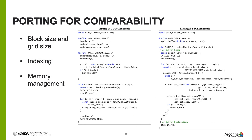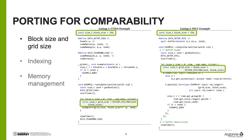For our SYCL implementation of the Raja Performance Suite, we take the mindset of a developer who has an existing CUDA implementation and would like to maintain the performance they get while porting the code into SYCL. As shown on the left, we have a CUDA example similar to many of the kernels in the Raja Performance Suite. On the right is how we, in general, implemented our SYCL variant.